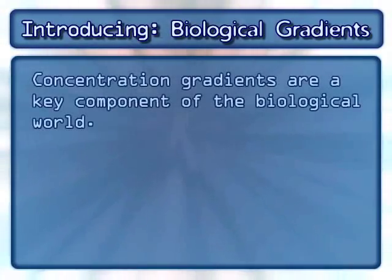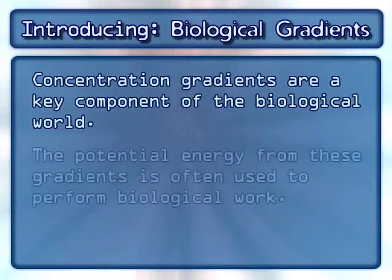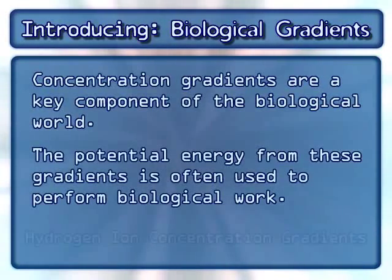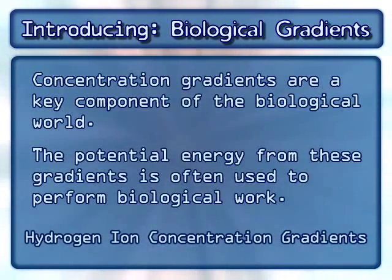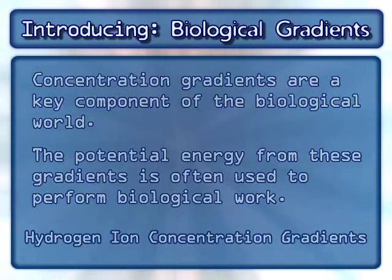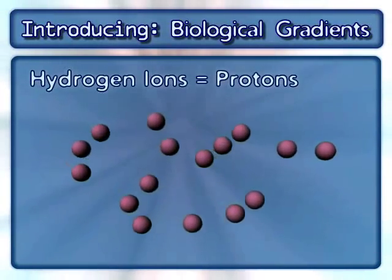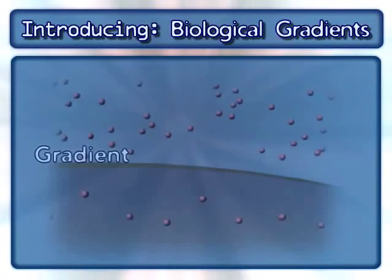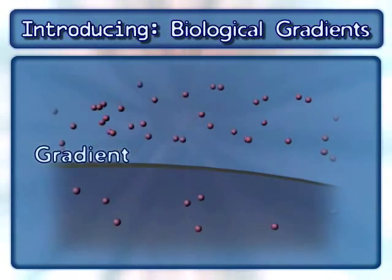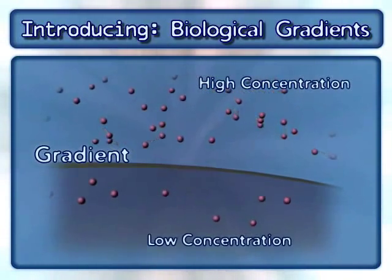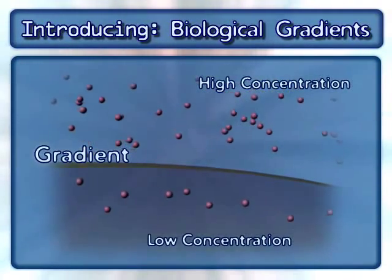Concentration gradients are a key component of the biological world. The potential energy from these gradients is often used to perform biological work. Here we will focus on hydrogen ion concentration gradients. Hydrogen ions are also known as protons. A gradient exists when there is a higher concentration of a molecule in one compartment compared to a neighboring compartment.